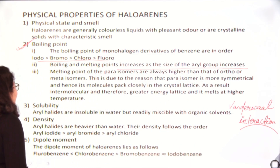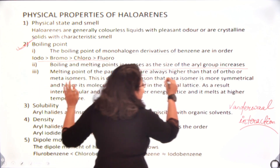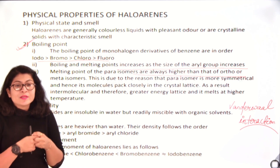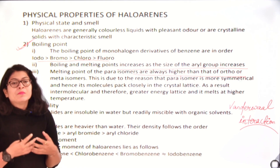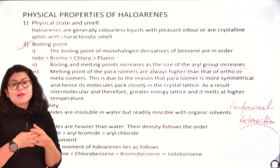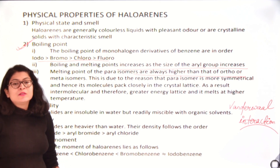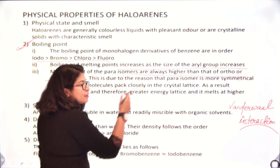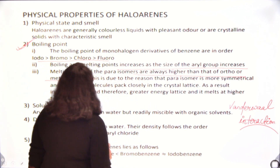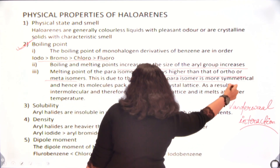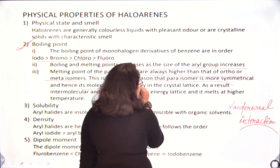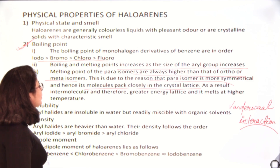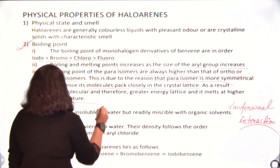The melting point of para isomers is always higher than that of the ortho isomers. In the case of the para isomer, they are more symmetrical and fit into the crystal lattice better. As a result, separating them is very difficult compared to ortho and meta isomers. The molecules pack closely in the crystal lattice, resulting in greater intermolecular forces and therefore they melt at a higher temperature.